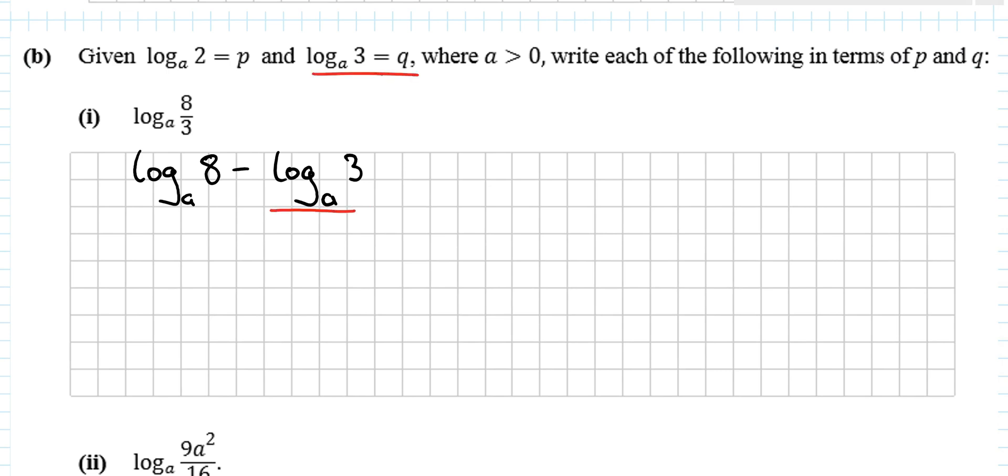So that's rule number 2 of logs. We notice here that this is q. And now we're trying to change this to have a 2 here instead of an 8. So we might notice, and this will come with practice, that 8 is 2^3. Minus q. And then rule number 3 of logs is going to be used here. We can bring that power out to the front.